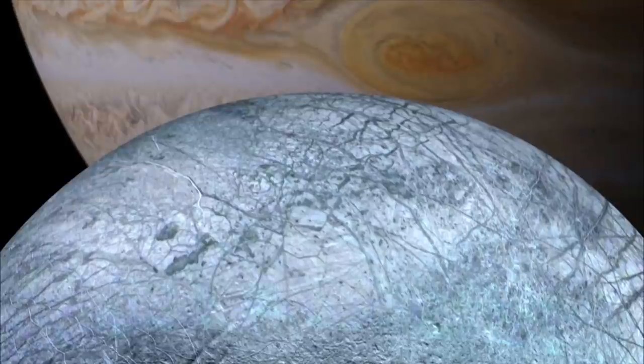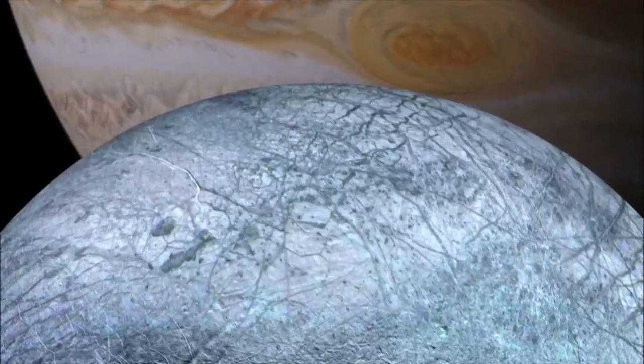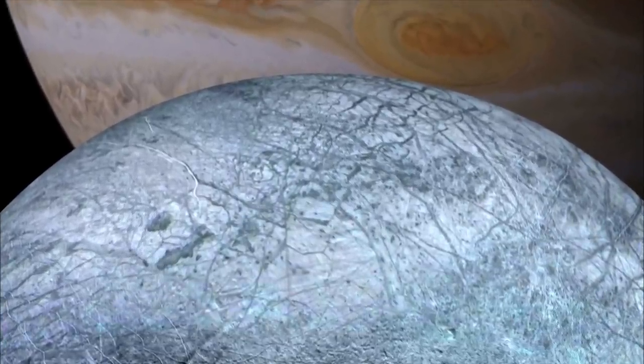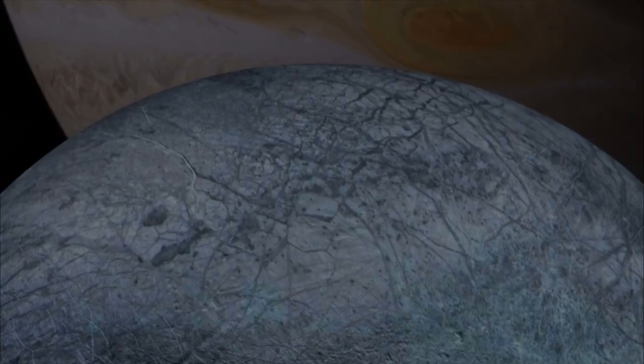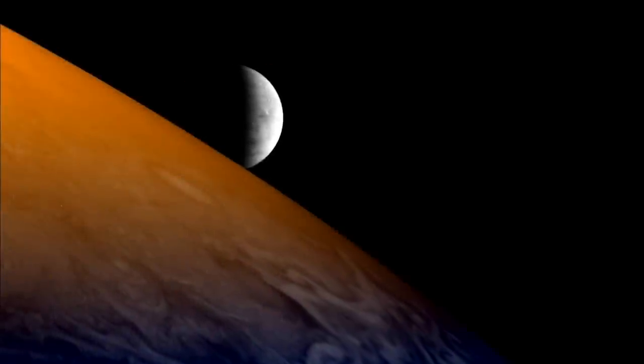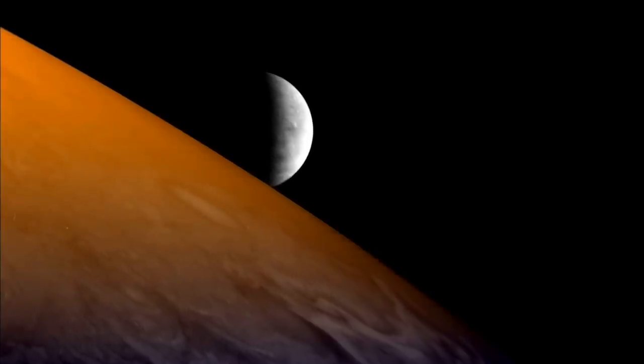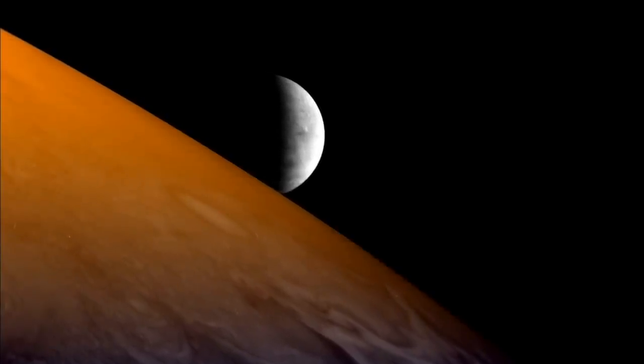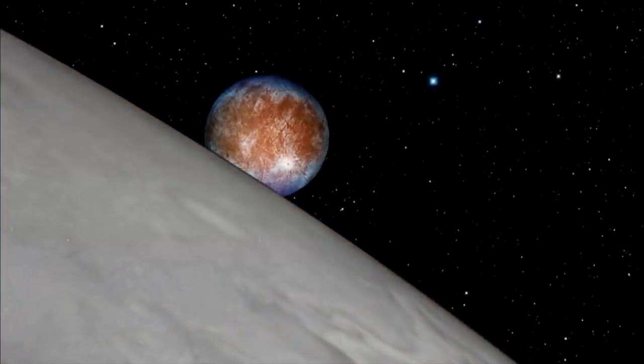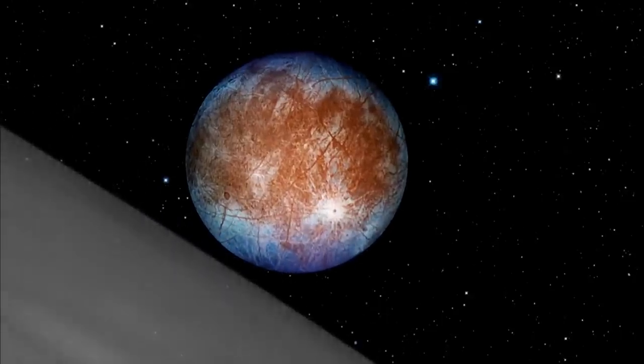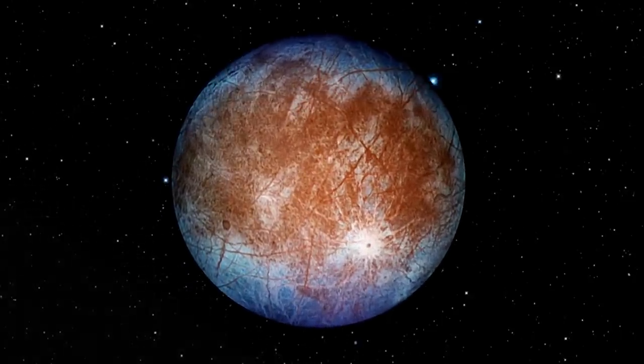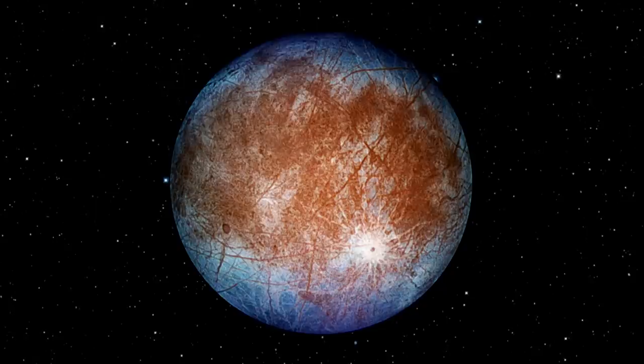A better opportunity for exploring the ocean of another world may exist on Europa. At first glance Europa seems like the least interesting of Jupiter's moons because its surface is so flat and smooth. Its lack of dramatic relief might be an indication that water isn't far below.